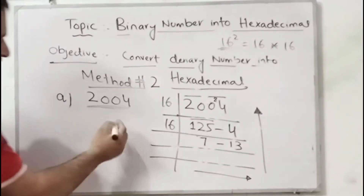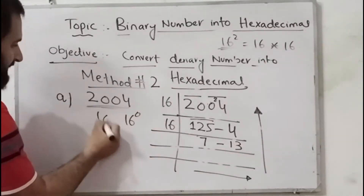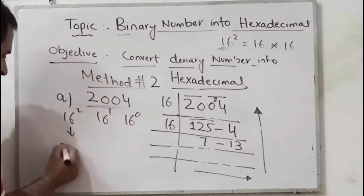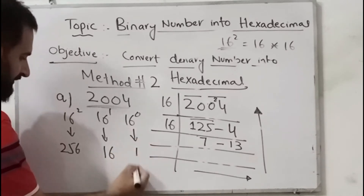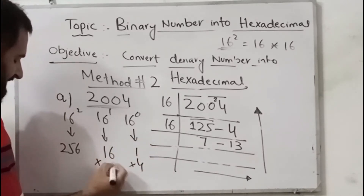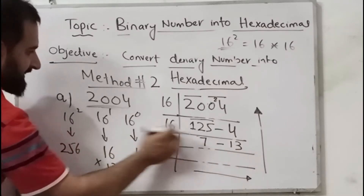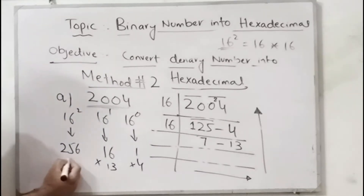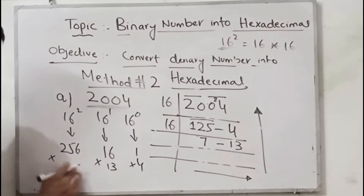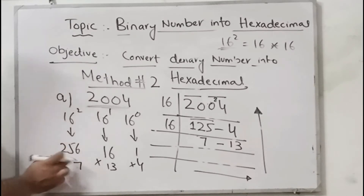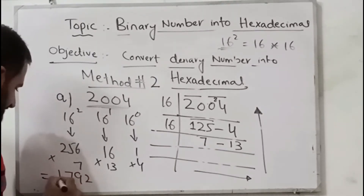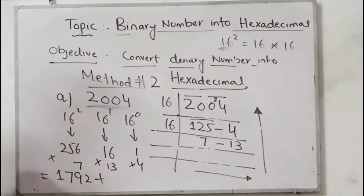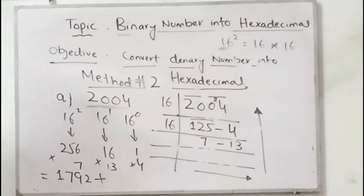So here we have: 16 power 0 is 1, 16 power 1 is 16, 16 power 2 is 256. Multiply 1 by 4, multiply 16 by 13, and multiply 256 by 7. So 256 multiplied by 7 gives you 1792. Then 16 multiplied by 13 gives you 208.